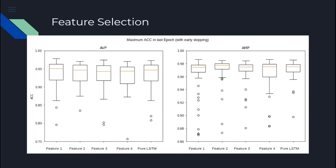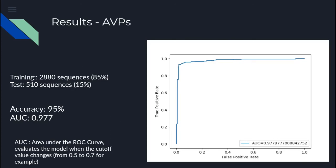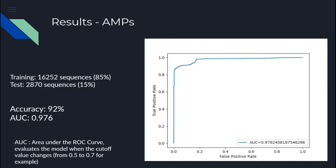We performed a feature selection step for the random forest model, in which we tested the performance of the model with four different feature sets and a range of hyperparameters for both models. The pure LSTM feature set represents an architecture without the random forest model and acts as a control group. In both the AVP and AMP prediction tasks, the top performing model utilizes feature set 4, although all feature sets were roughly equivalent. When identifying AVPs, the model obtained 95% accuracy and an area under the curve of 0.977. In the AMP prediction task, the model obtained 92% accuracy and an area under the curve of 0.976.